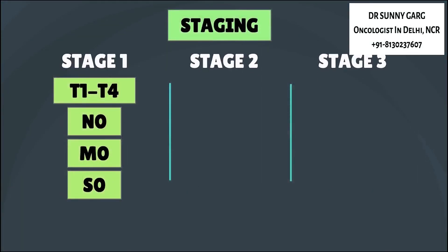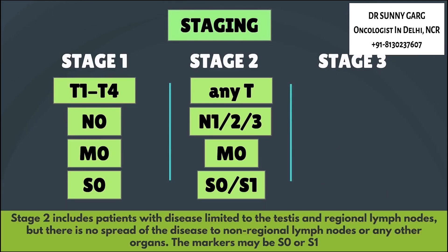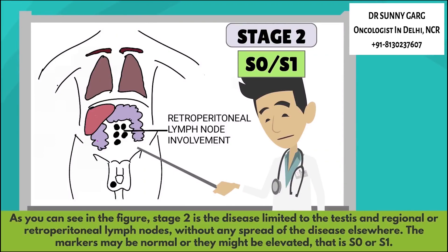Stage 2 includes patients with the disease limited to the testes and the regional lymph nodes, but with no spread to non-regional lymph nodes or any other organs. As seen in the figure, Stage 2 has disease limited to the testes and the regional or retroperitoneal lymph nodes, without spread elsewhere. The markers may be normal or elevated, that is S0 or S1.